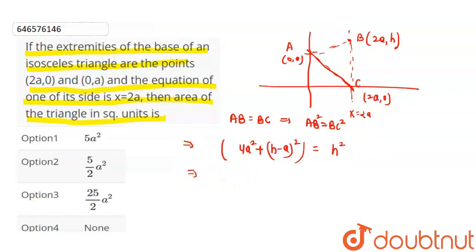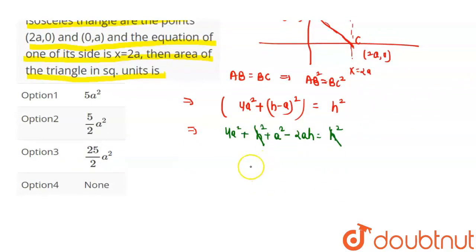Solving this: 4a square plus h square plus a square minus 2ah equal to h square. H square cancels out. Therefore h equal to 5a by 2. H value is obtained.